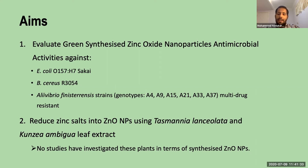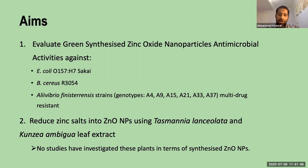The second aim of this study is the reduction of zinc salt into zinc oxide using Tasmannia lanceolata and Kunzea ambigua leaf extract. These plants are industrially used for essential oil extraction. There are no studies that have investigated these plants in terms of synthesizing zinc oxide nanoparticles.